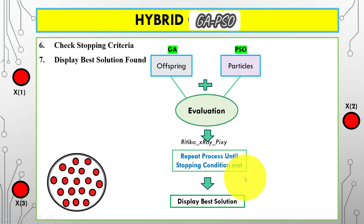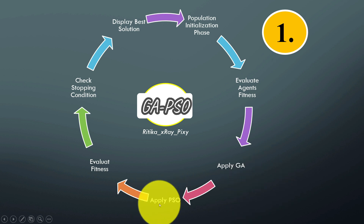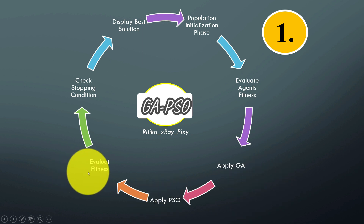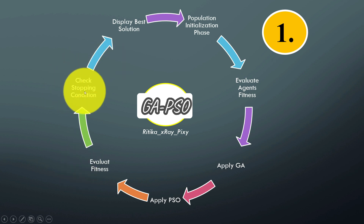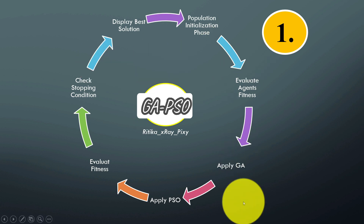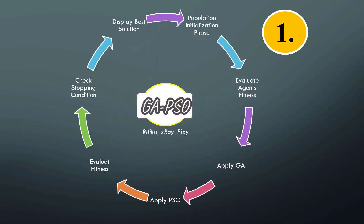To summarize the process: initialize the population, evaluate agents, apply the genetic algorithm phase, then the particle swarm optimization phase, evaluate agent performance for the new solutions, save the best result, and check the stopping condition. If met, stop and display the best solution found; otherwise repeat the process. That's all about this video — if you have any questions, comment below, and thanks for watching.